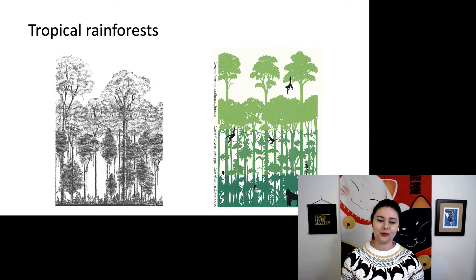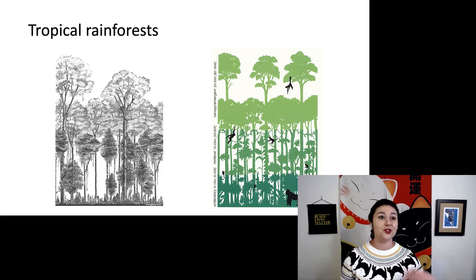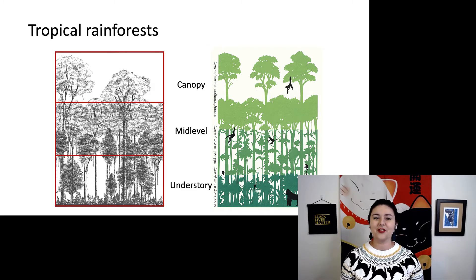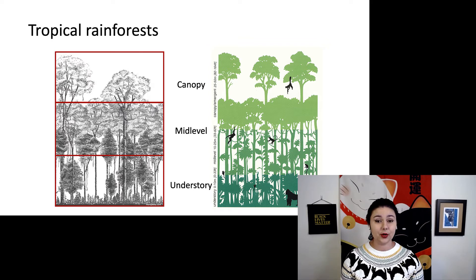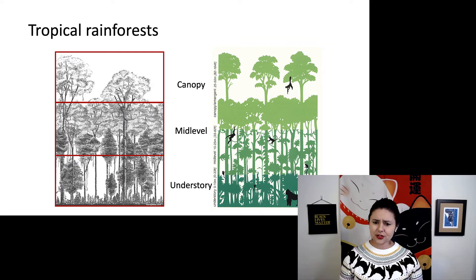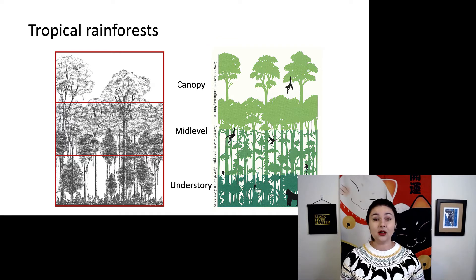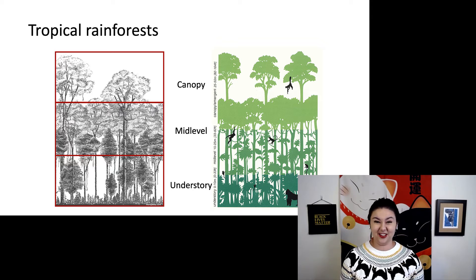In these tropical rainforests, we have complex structure within the trees because there is just so much vegetation going on. At the top we have our canopy. In the middle, we have the mid-level. And lastly, the understory. Different primate species will live in different levels, and each level of the rainforest is very different. The canopy has a lot of light, and the understory is actually quite dark, because the canopy and all of the trees above it block all of the light.